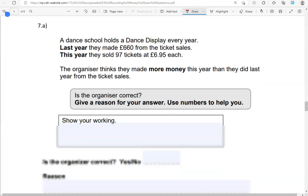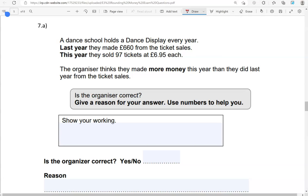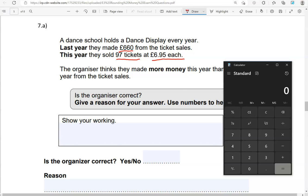A dance school holds a dance display every year. Last year they made £660 from the ticket sales. This year they sold 97 tickets at £6.95 each. The organiser thinks they made more money this year than they did last year from the ticket sales. Is the organiser correct? Give a reason for your answer. Use numbers to help you. Show your working. So what we're going to do is we're going to compare the two.